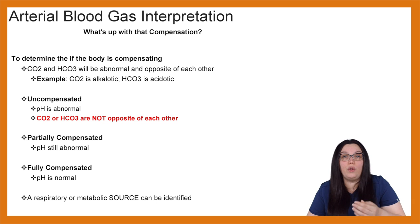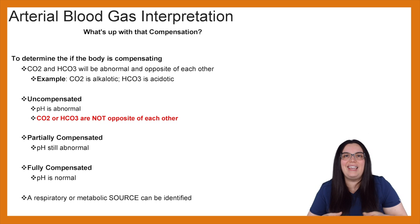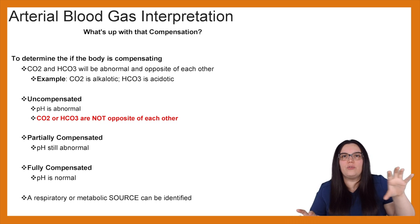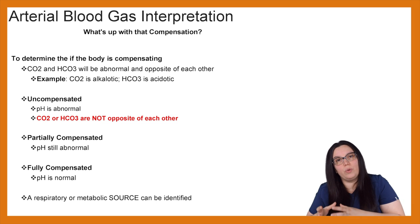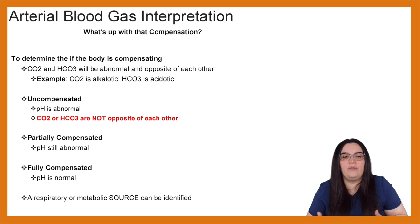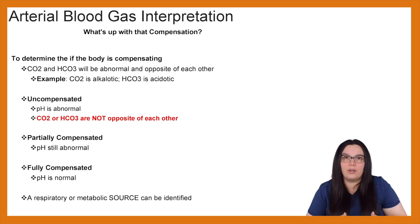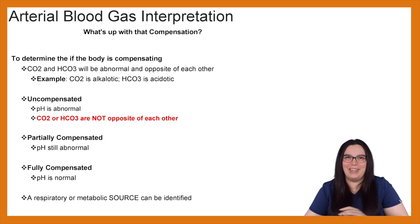When it comes to full compensation — fully compensated — we're going to have a pH that is normal. While those two systems are trying to fix each other, the pH has gone back to normal, which is between 7.35 to 7.45. That makes it a little bit difficult because then you have to determine whether it is a respiratory or metabolic source when it comes to your arterial blood gases. We're going to do a couple examples of what that looks like and how we make that determination.